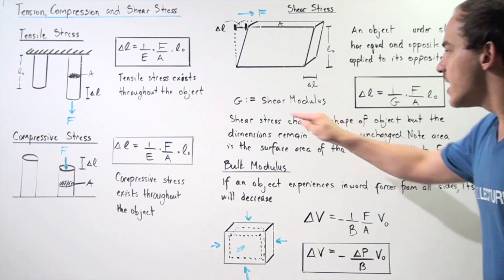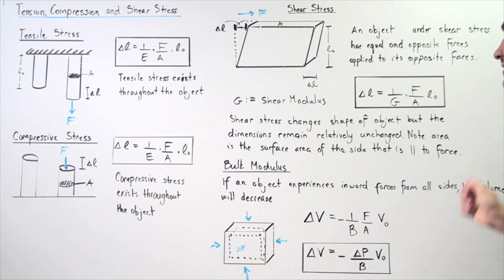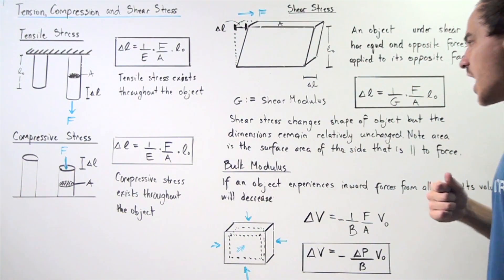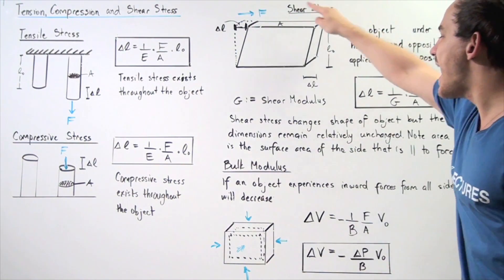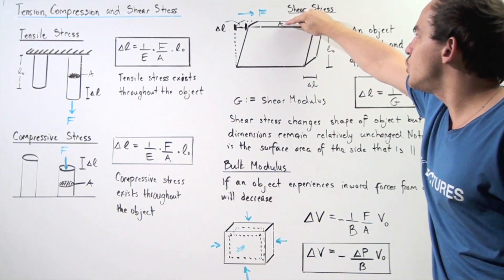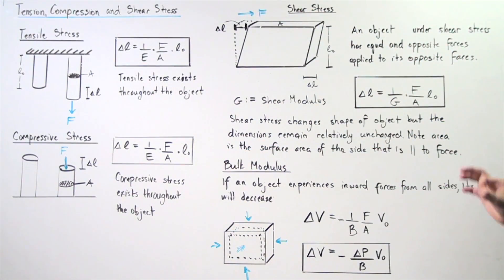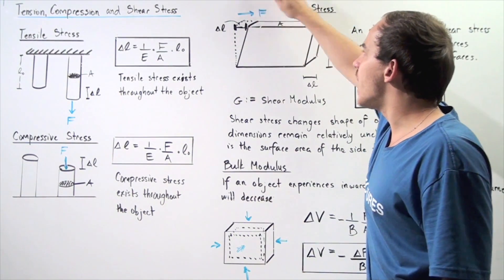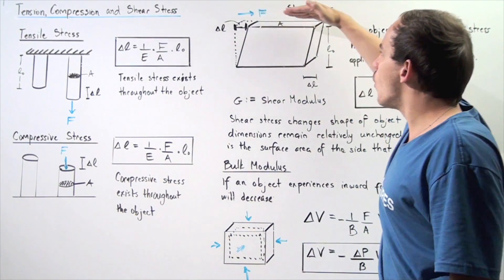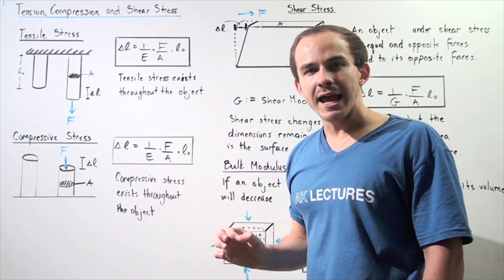Shear stress changes the shape of the object, but the dimensions of the object remain relatively unchanged. Notice that the area A we need to use is the surface area of the side that is parallel to the applied force — so this force and this side lie along the same plane.